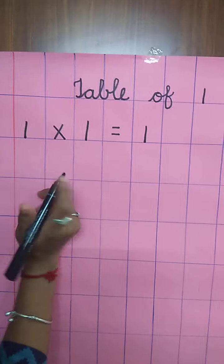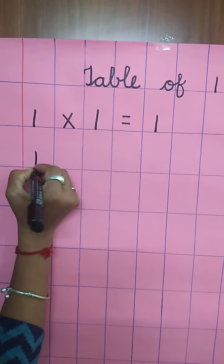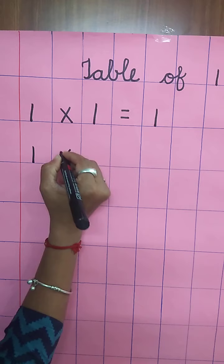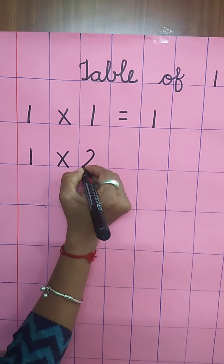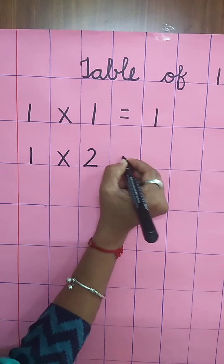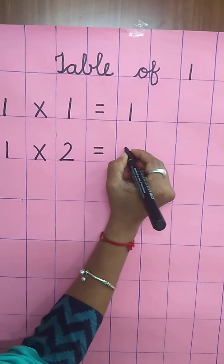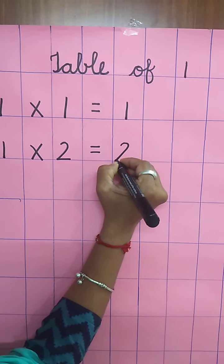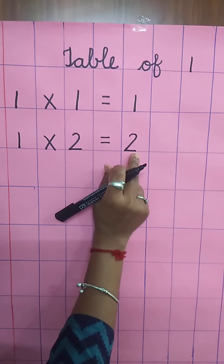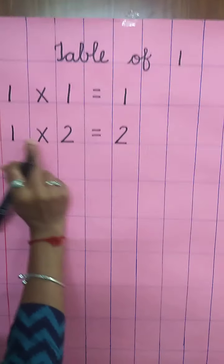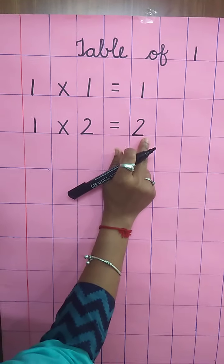Don't leave the line. Again, write down one. Multiplying sign. Write down two. Equal sign. And write down two. One two's are two. Speak and write, children. One two's are two.